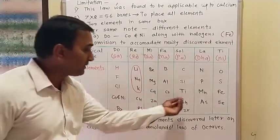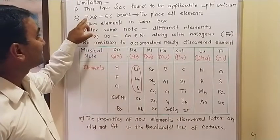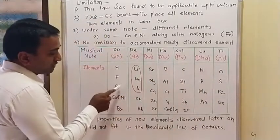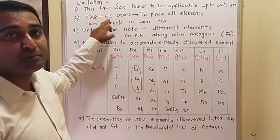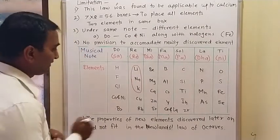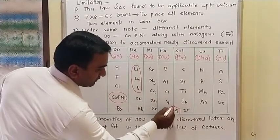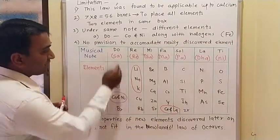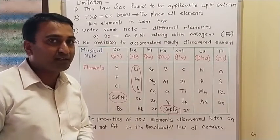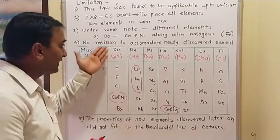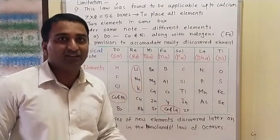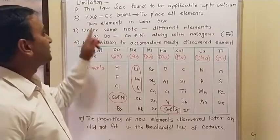The second limitation: Newlands arranged 56 boxes in a 7×8 grid. To fit all known elements, he placed two elements in the same box. But if those two elements have different properties, how can they fit in the same note? He did not explain why he did this. Having two elements in the same box is the second limitation.